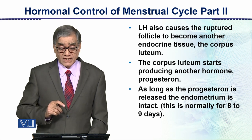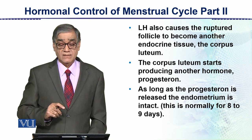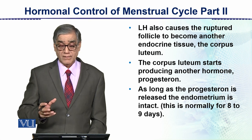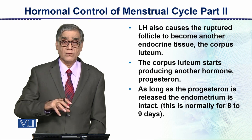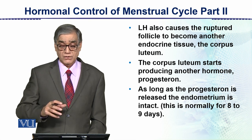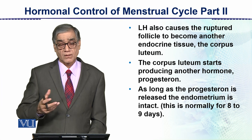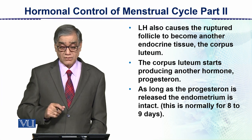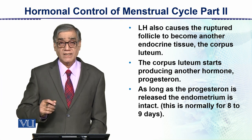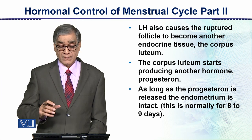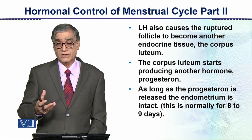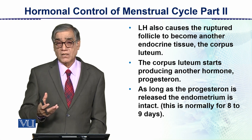LH also causes the ruptured follicle to become another endocrine tissue, the corpus luteum. After this, the corpus luteum starts producing another hormone, which is progesterone.